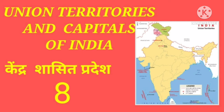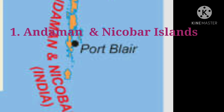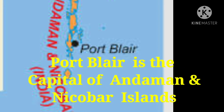There are 8 Union Territories in India. Let us know about these Union Territories. Andaman and Nicobar Island is a Union Territory of India. Port Blair is the capital of Andaman and Nicobar Islands, and the land area of the islands is approximately 8,249 km².